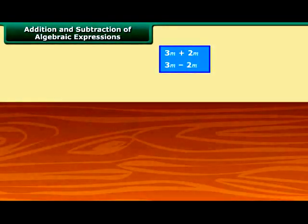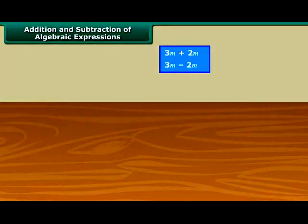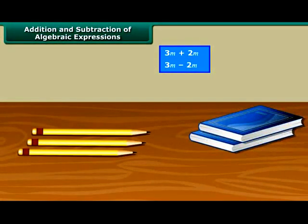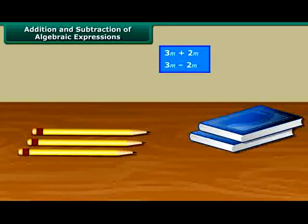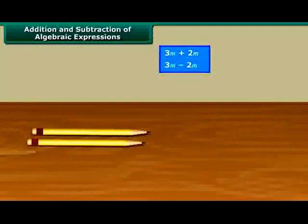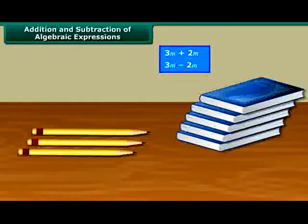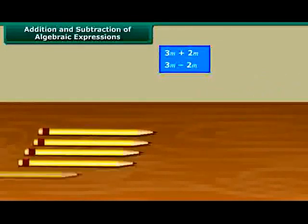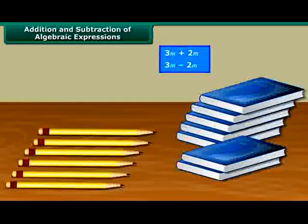Think of it like this: on a table, we have 3 pencils and 2 books. We cannot add the 3 pencils to the 2 books because they are not the same kind of objects. Now, if we get another 3 pencils and 5 books, altogether we now have 6 pencils and 7 books. Again, we can't combine these objects since they are different.